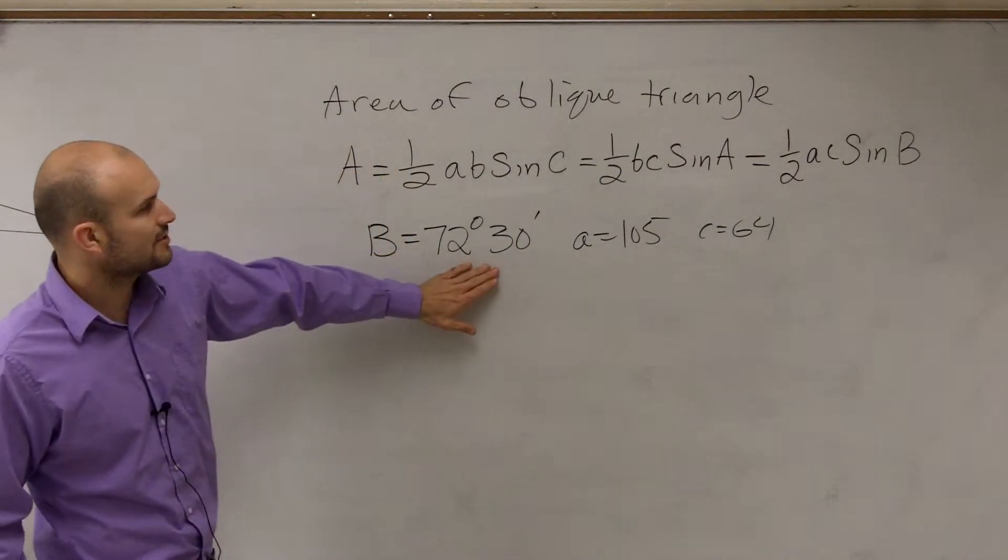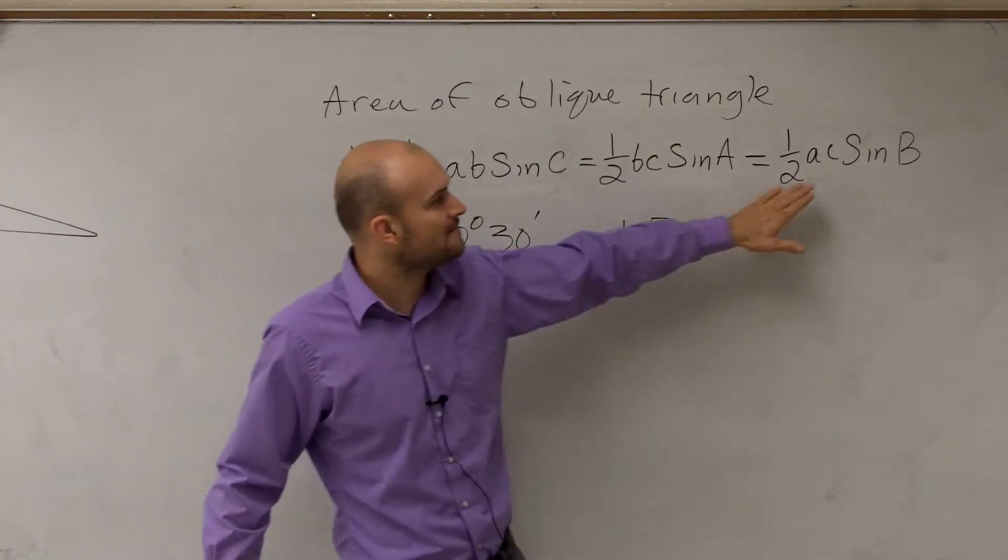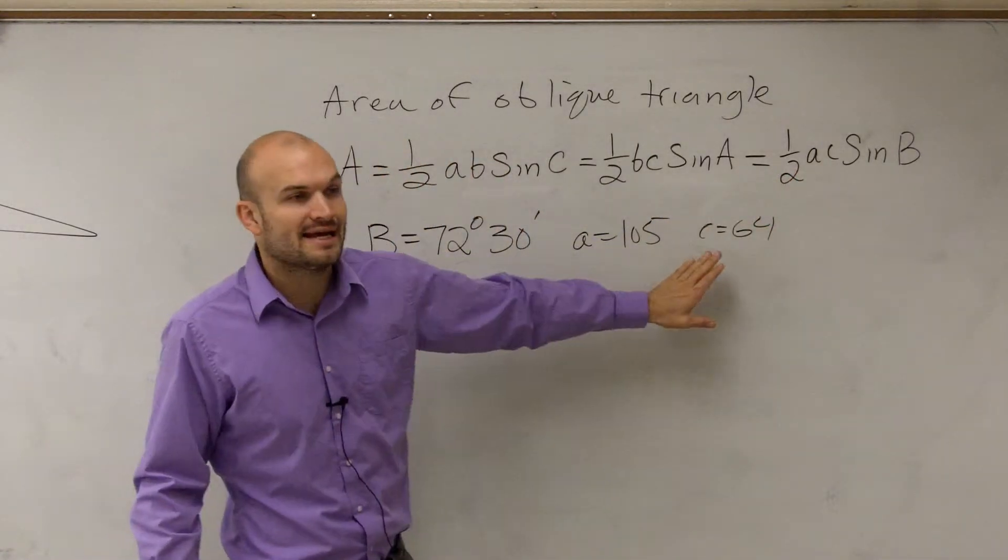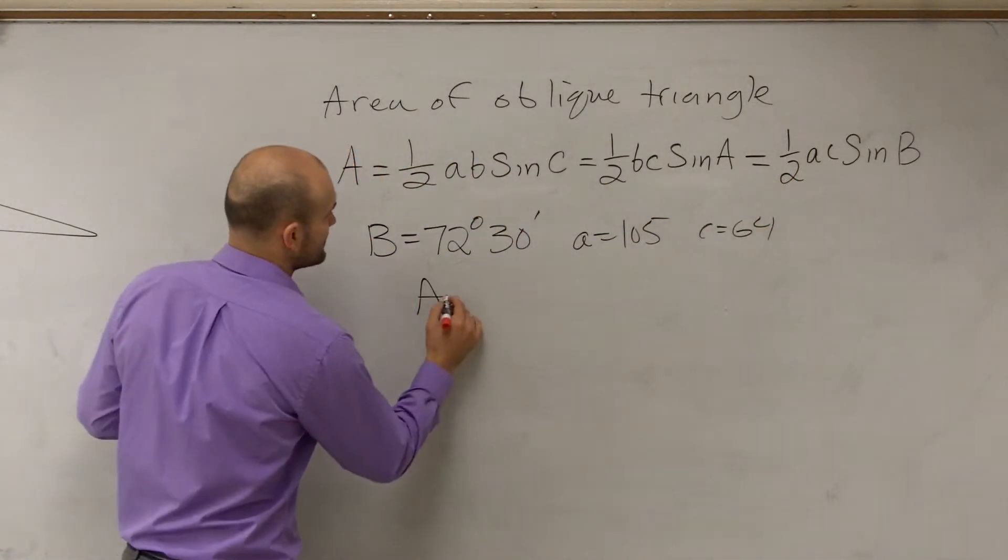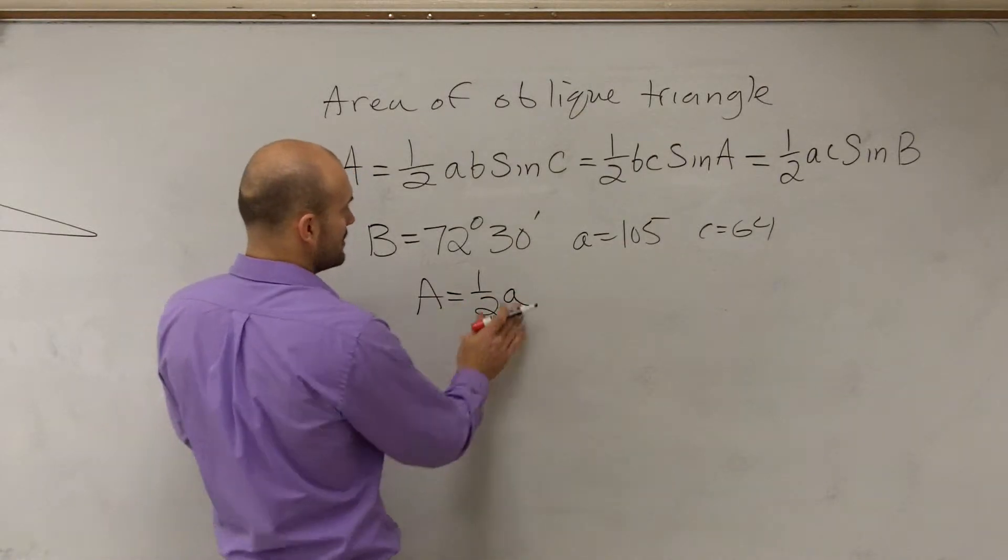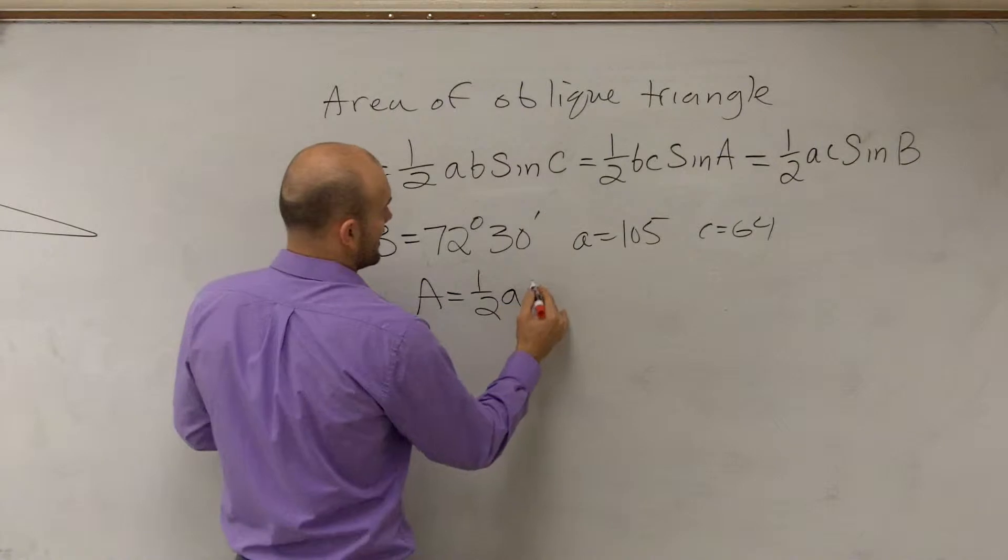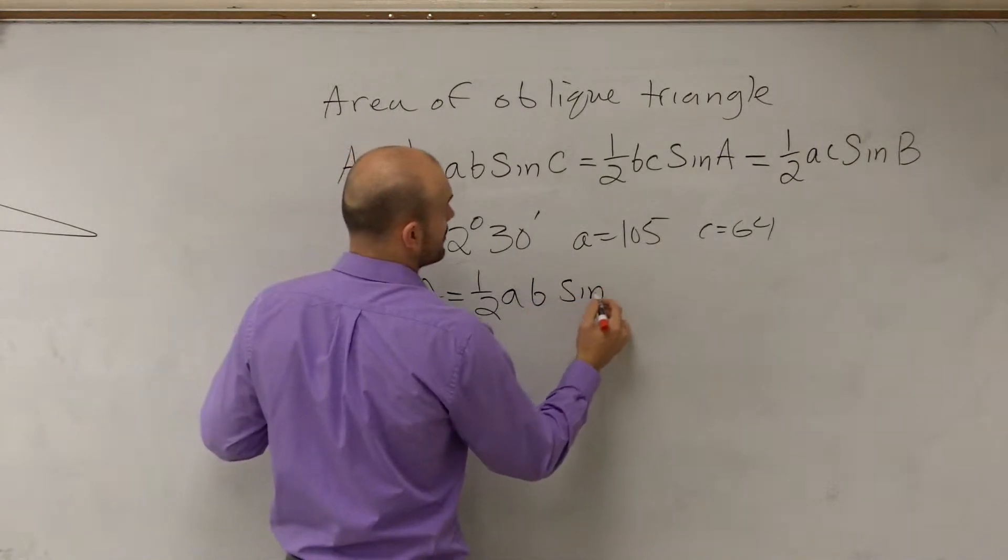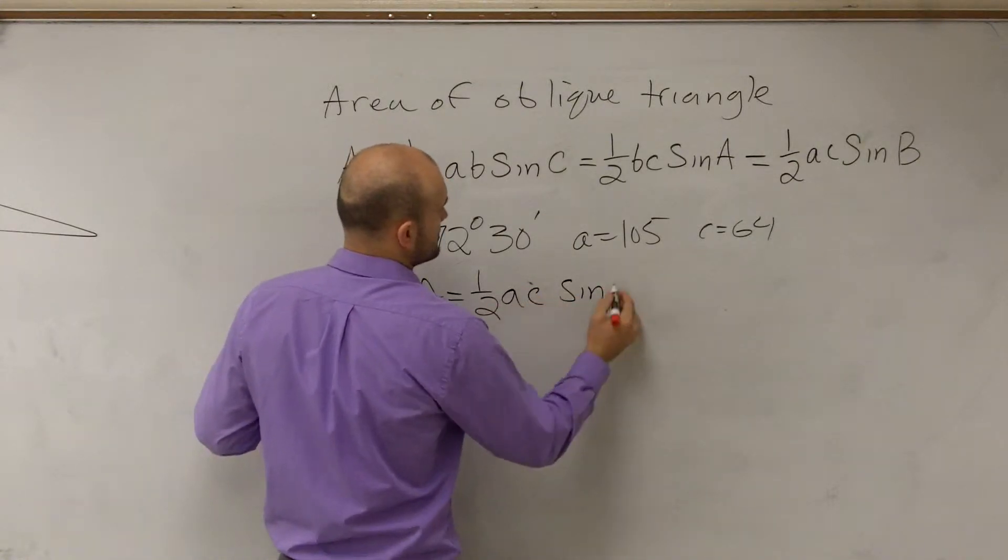We look at the information that we're given, and we know that we have angle B. So we're going to take the sine of B and multiply it by A times C. The area of this triangle is equal to 1/2 A times C times sine of B.